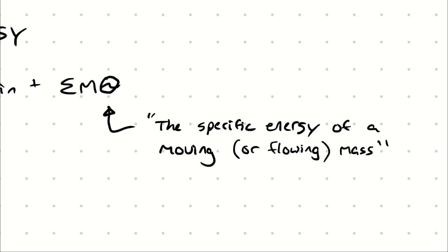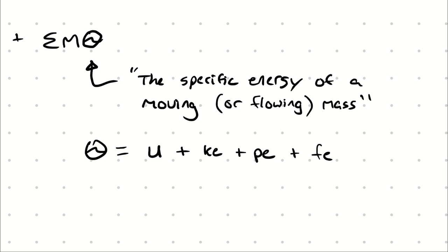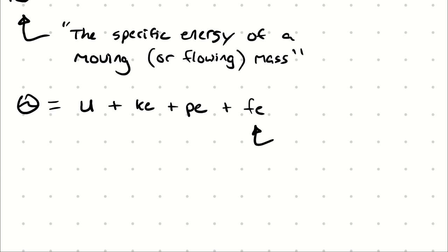That theta term starts out looking the same way as the energy of our systems looked when we were talking about control masses. We start off with the combination of the microscopic and macroscopic energy in the same way — meaning that we're talking about the specific internal energy plus the specific kinetic energy plus the specific potential energy — and then we add to that a specific flow energy. That flow energy essentially represents how much energy it takes to displace the fluid in front of it.